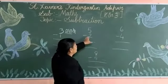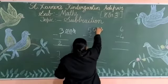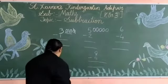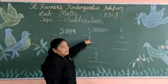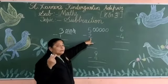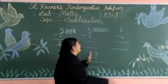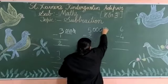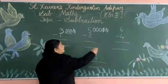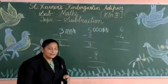Now next: 5 minus 2. Toh sabse bada number kaun si hai? 5. Toh 5 circles — 1, 2, 3, 4, 5. Kitni numbers aapko remove karna hai, nikaalna kitna hai? Yes, 2. Jo niche diya gaya number, utni circles aapko yahan pe khat dhenna hai. Toh yahan 2, toh 2 circles aapne khat dhena. Baqi kitni bachay? Woh aapko count karna hai. 1, 2, 3. Number? 3. Very good.